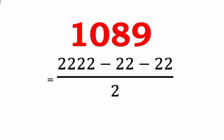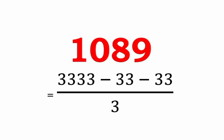The next representation of 1089 uses only the digit 2 and fractions: 2222 minus 22 minus 22, divided by 2. Similarly, we can write 1089 using the digit 3 only: 3333 minus 33 minus 33, divided by 3, which equals 1089.